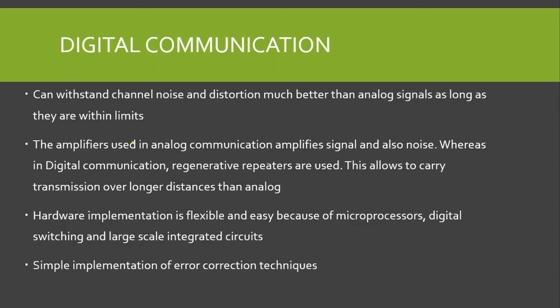In analog signal transmission, we use amplifiers, but with amplification both the signal power and noise power are boosted. We do not want the noise power to be boosted — this is the disadvantage of analog communication. In digital communication, we can use regenerative repeaters, which can be installed at specific places.